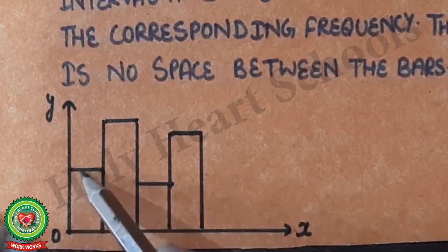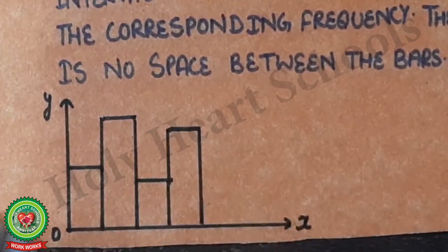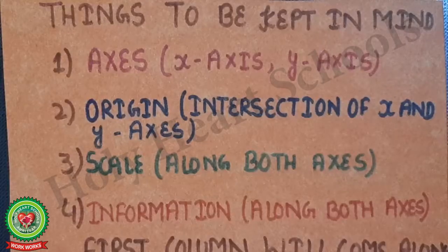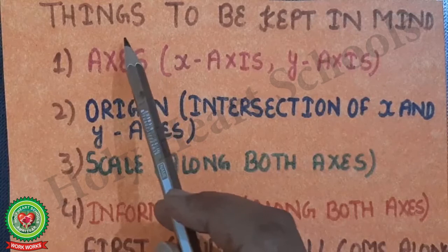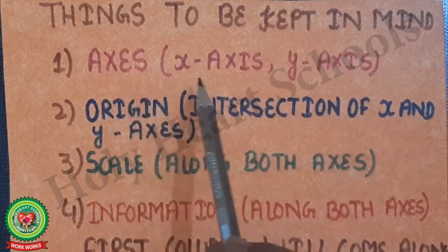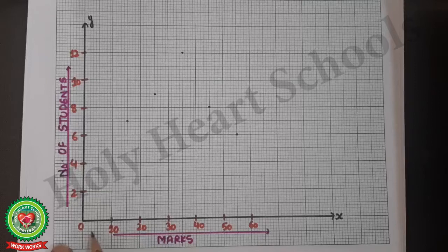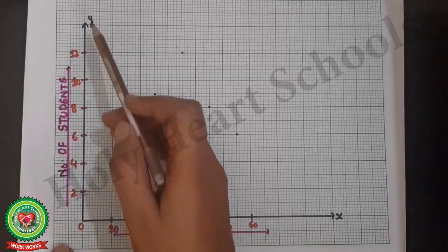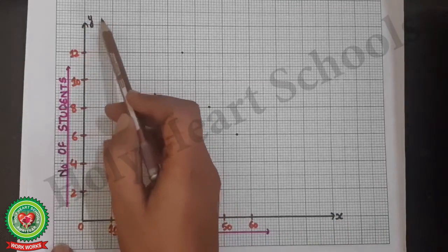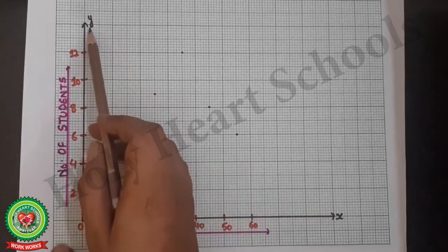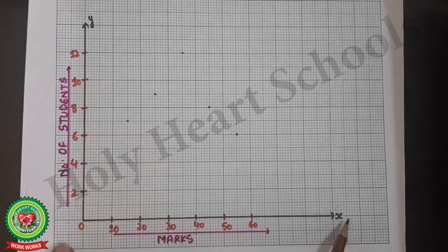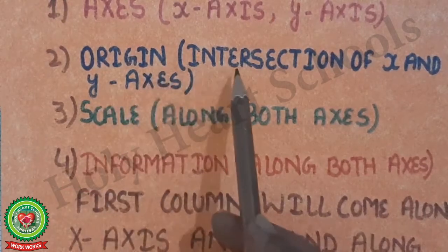The width tells us about the class interval, and the corresponding height tells us about the frequency. Before starting the plotting of a histogram, we must keep in mind: the horizontal line is known as x-axis, and the vertical line is known as y-axis. Before plotting, we must write Y here and X here.